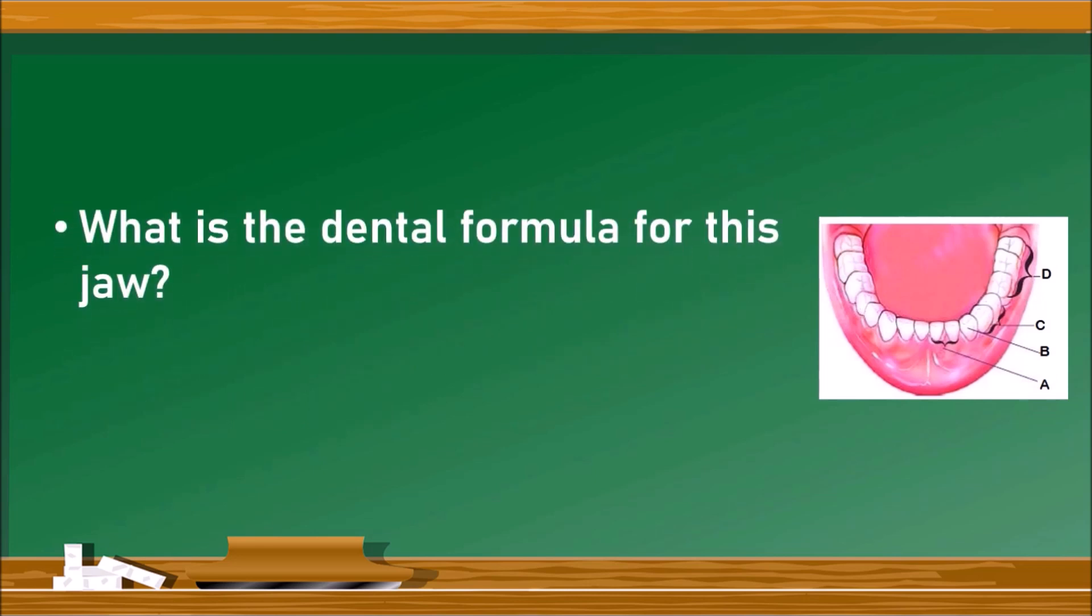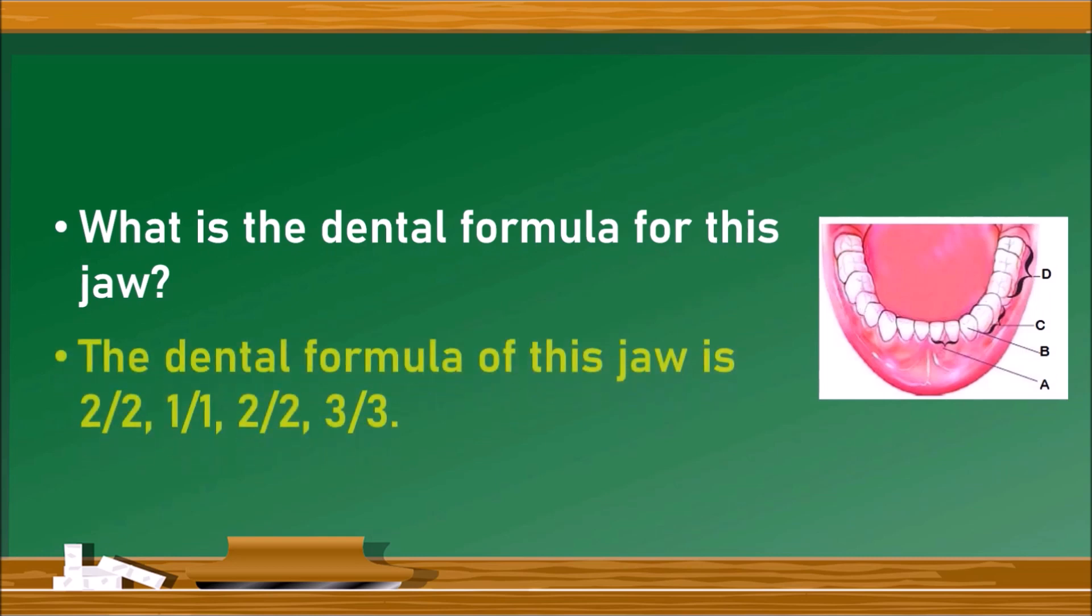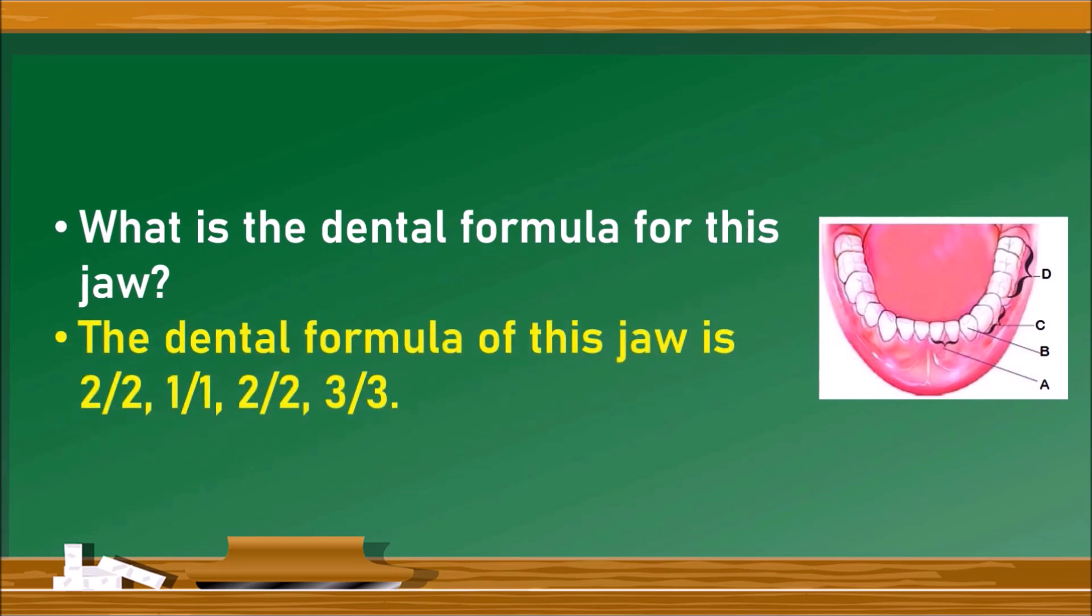What is the formula for this diagram? The dental formula of this jaw is 2/2, 1/1, 2/2, 3/3. That is, there are two incisors, one canine, and two premolars and finally three molars on both sides of the jaw.